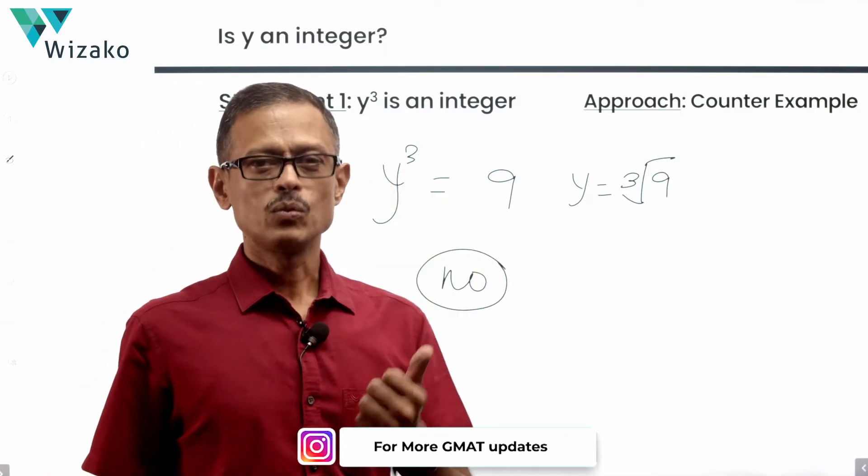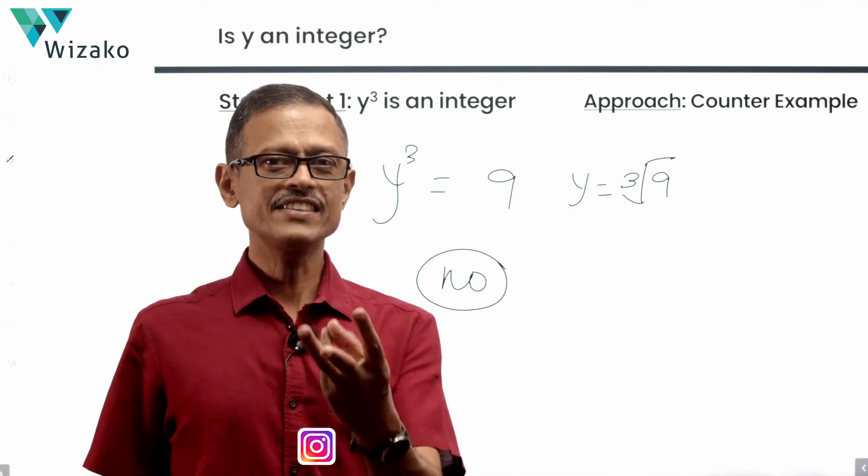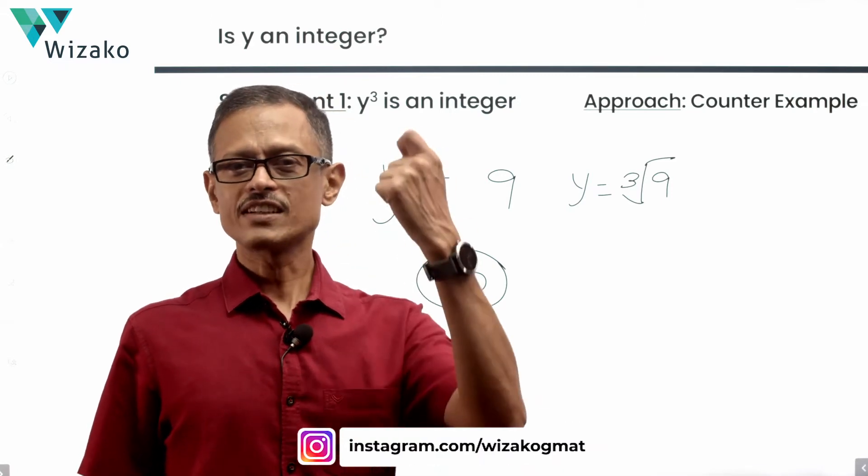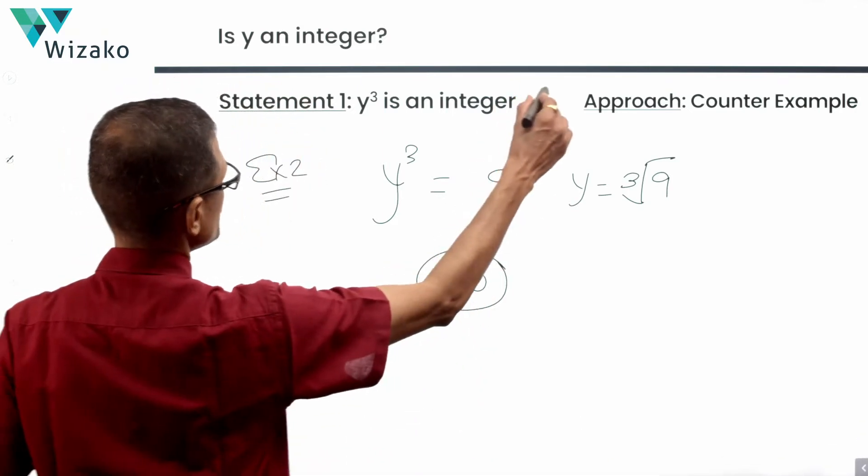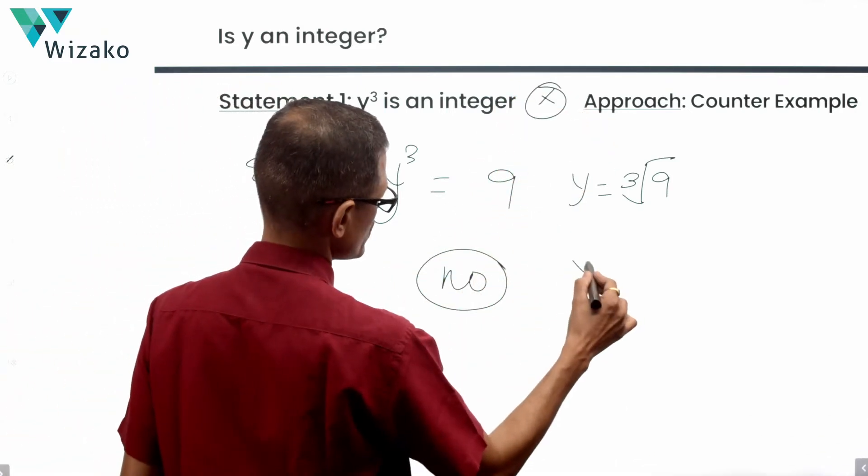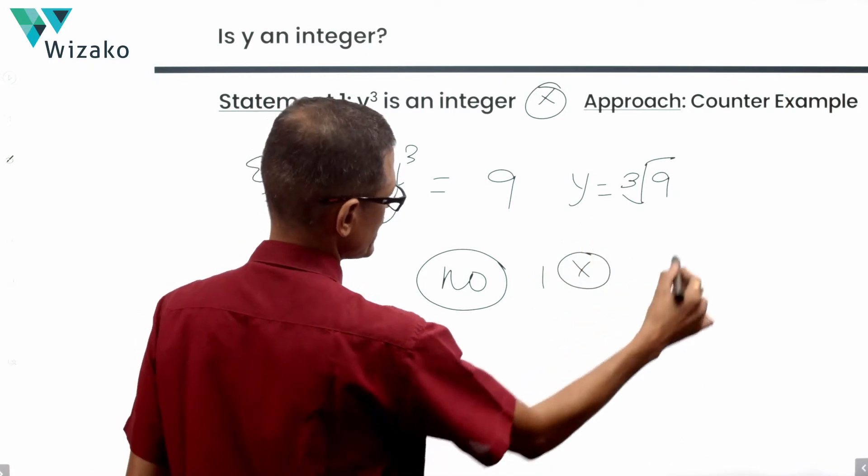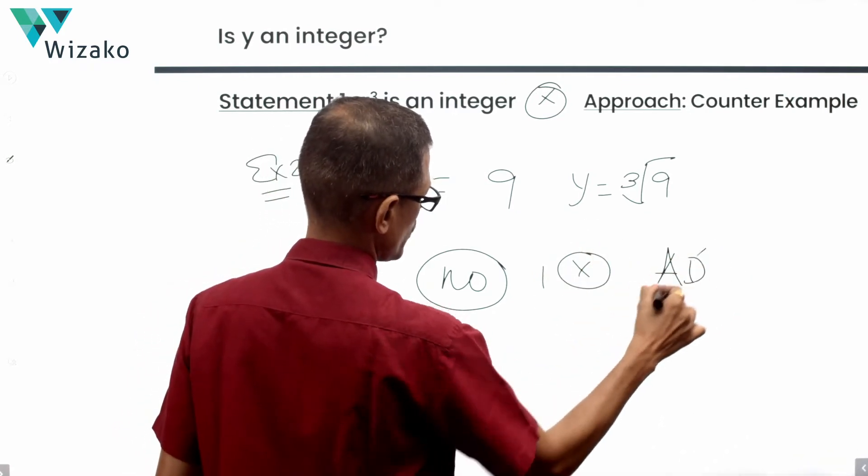In both the examples, was y cube an integer? Yes. 8 is an integer, 9 is an integer. Y cube was integer in both examples. First example, we got yes as the answer. Second one, we got no as the answer. Statement 1 is not giving us a conclusive answer. So if 1 is not giving us a conclusive answer, rule out answer options A and D.